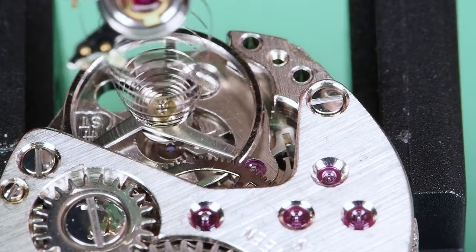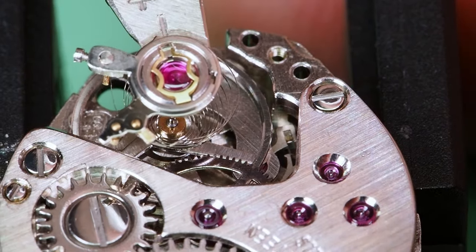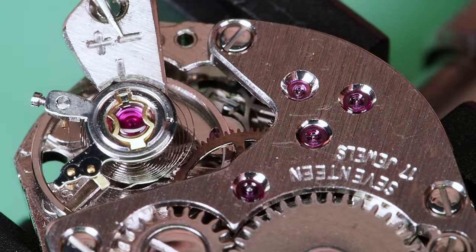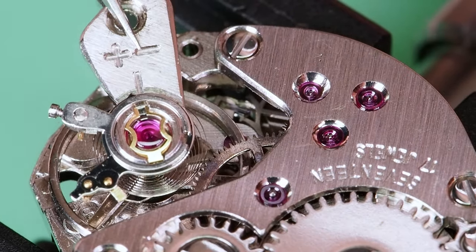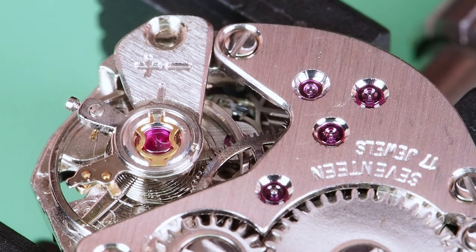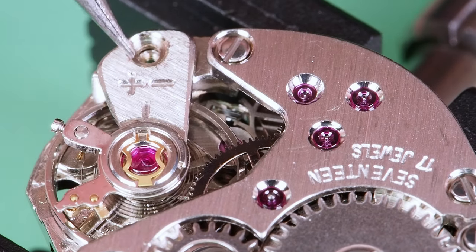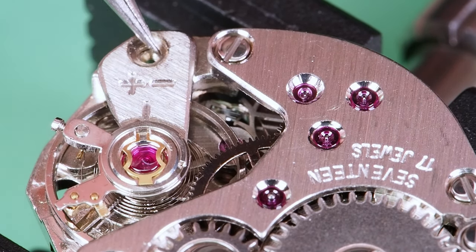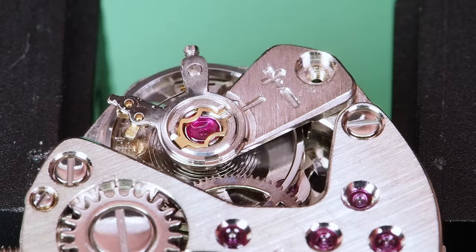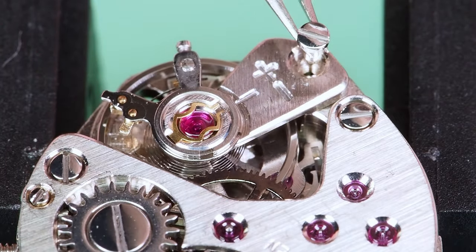Now I can insert the balance. I have to be very careful here because the balance spring is positioned under the center wheel and with the size of this movement I don't have much space here to maneuver it. It's turning very nicely, the amplitude looks good. I'll secure it with its screw.